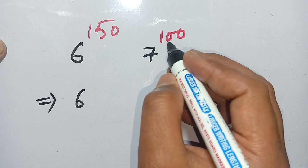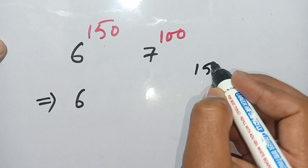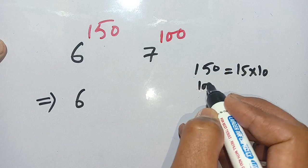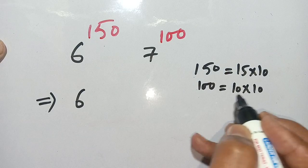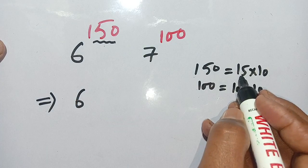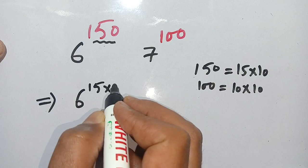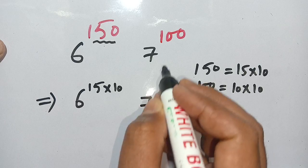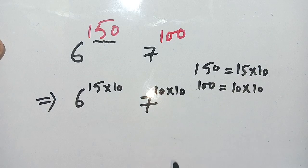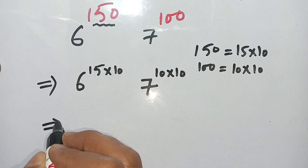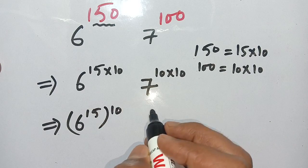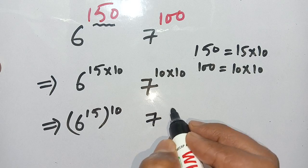We can write the exponents as multiples of 10: 150 can be written as 15 times 10, and 100 can be written as 10 times 10. So 6^150 becomes (6^15)^10, and 7^100 becomes (7^10)^10.